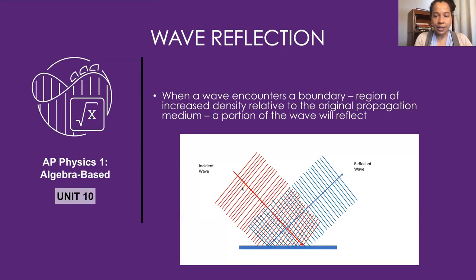Reflection occurs when an incident wave hits some barrier, and the incident wave either cannot pass through the barrier or only partially passes through. In the case of optics, if this were a piece of glass, the incident wave may mostly pass through, but some component will get reflected. What you see here is an incident wave coming in and then a reflected component going out. The law of reflection tells you exactly the angles between the incoming and outgoing waves, whether the wave is reflected or transmitted.